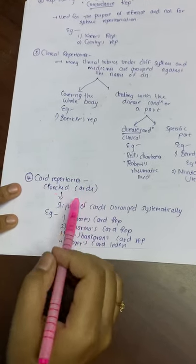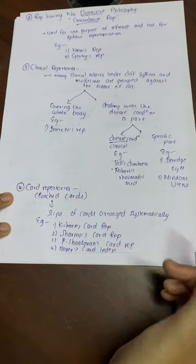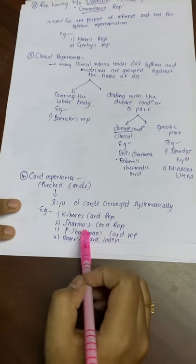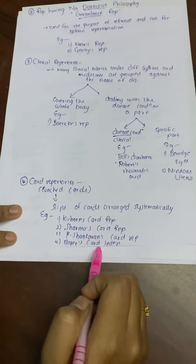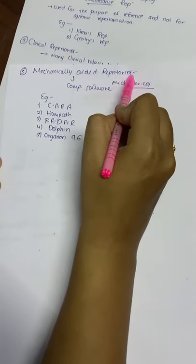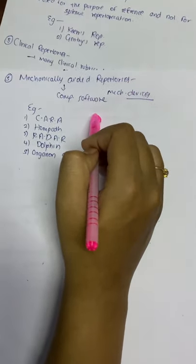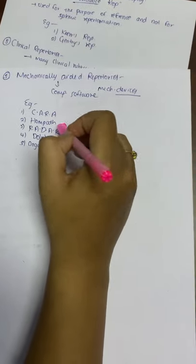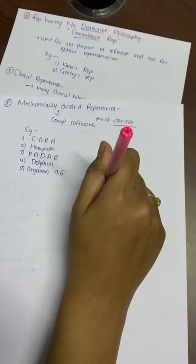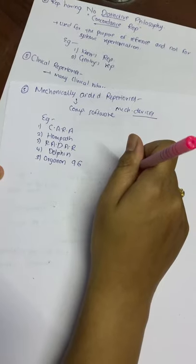Card repertory ko punch cards bhi bolte hain, jisme slips of cards are arranged systematically. Card repertories ke examples: Kishore's Card Repertory, Sharma's Card Repertory, P. Sankaran's Card Repertory, and Boger's. Lastly, mechanically aided repertory yaani computer repertory — examples: CARA, HomePath, RADAR, Dolphin, Organon 96. I hope you guys liked this video. If you find it useful, do like, share, comment, and subscribe to my YouTube channel. Thank you.